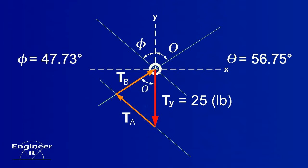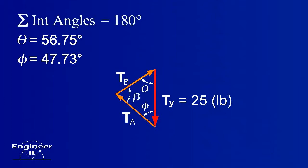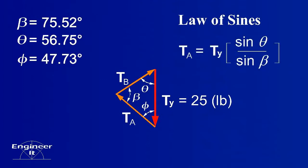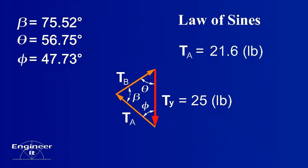Now relate the angles we found earlier to the angles in the polygon. All the interior angles can be found in this problem. The magnitude of vector TA can be found using the law of sines, and the magnitude of vector TB.